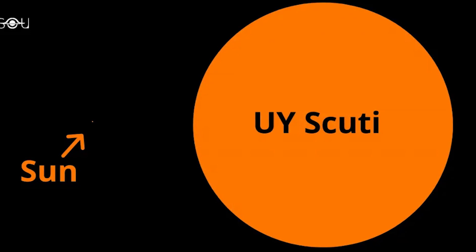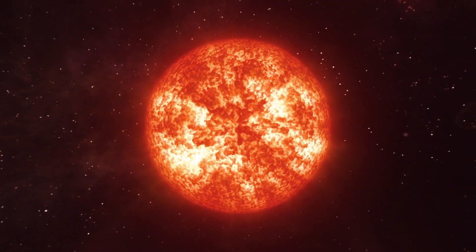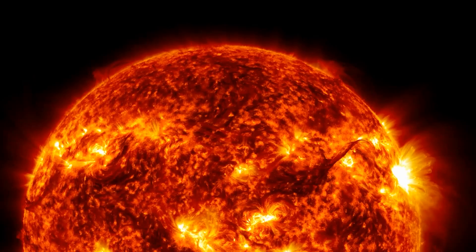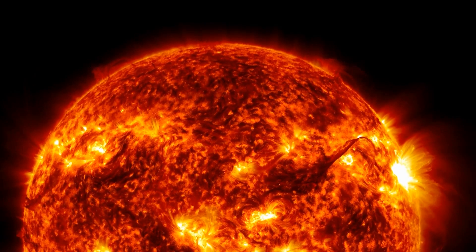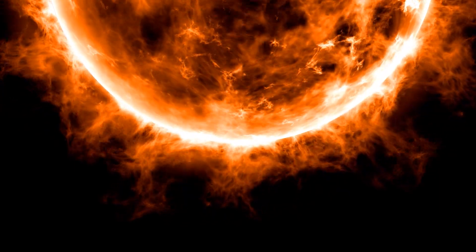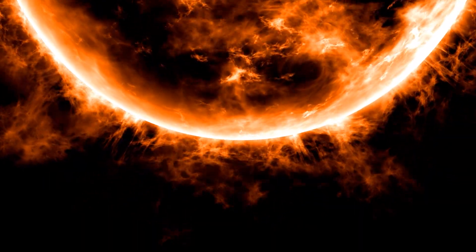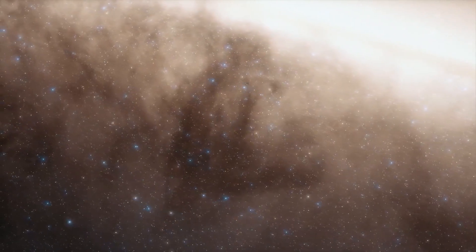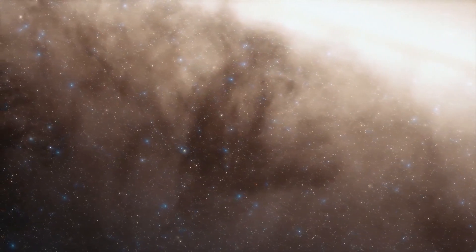Since UY Scuti doesn't stay static, size comparisons are still more difficult. Scudder emphasized that the star's brilliance varies along with its radius, and the measurement we have right now has a 192 solar radius error margin. Other stars may be able to surpass UY Scuti in the contest for size due to variations in or margins of error in each.